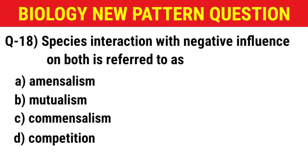Next question: Species interaction with negative influence on both species is referred to as — (A) amensalism, (B) mutualism, (C) commensalism, (D) competition. The correct answer is option D: competition.